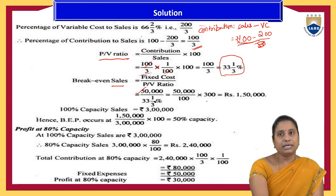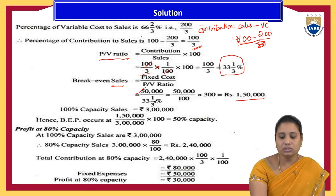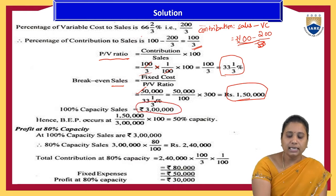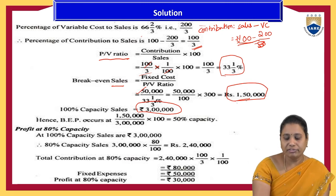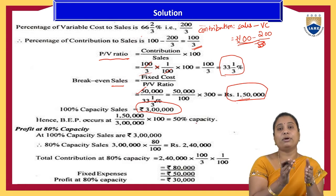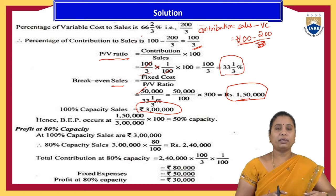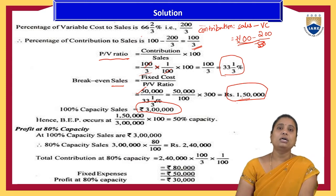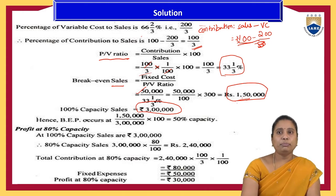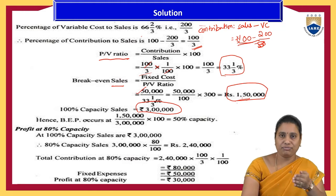At 100% capacity the total sales are ₹3 lakhs, and BEP sales are ₹1,50,000, which means the BEP occurs at 50% sales capacity. Hence BEP occurs at 50% of sales — out of full capacity, 50% is the break-even point and the remaining 50% is the margin of safety and profit level for the organization.